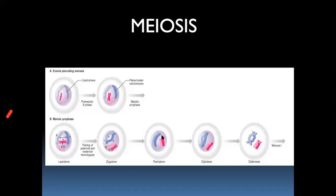The next important stage is diplotene, where genetic recombination occurs. You can see the color codes changing - the chromosomes of maternal origin exchange segments with paternal chromosomes at the adhesion patches. The chromosome starts splitting but in different ways, so each chromosome now has a combination of maternal and paternal genes - a new genetic composition.